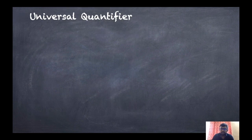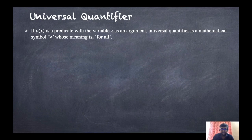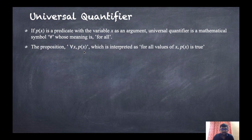Now we will discuss quantifiers. There are two types. The first one is the universal quantifier. If P(x) is a predicate with variable x as an argument, the universal quantifier is a mathematical symbol denoted as '∀' meaning 'for all' or 'for every.' The proposition ∀x, P(x) is interpreted as: for every x, or for all values of x, P(x) is true. It can also be written as ∀x [P(x)].